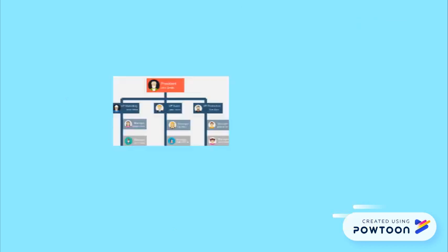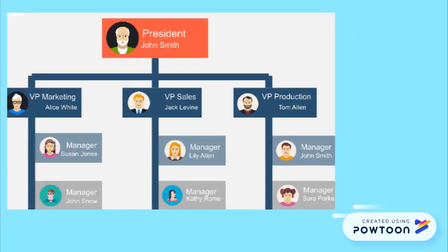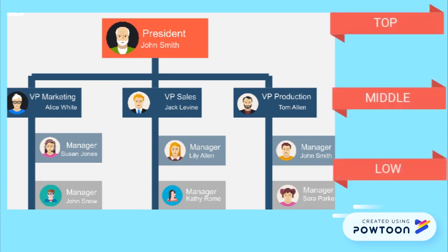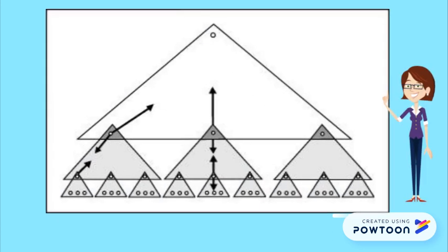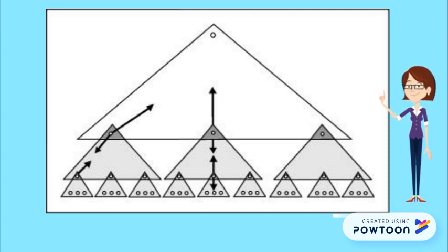Similarly, there is an organization which can be presented as a pyramid with different layers: top, middle, and low. In the linking pin model, we present the organization as a number of overlapping units in which a member of one unit is the leader of another unit, and he ensures coordination between groups and units.